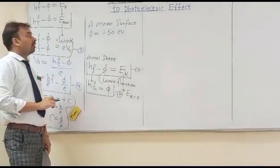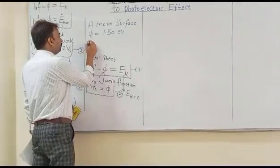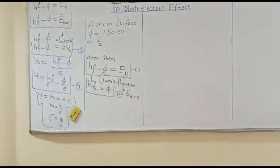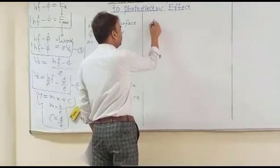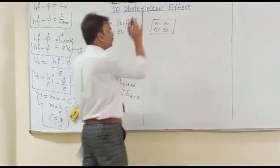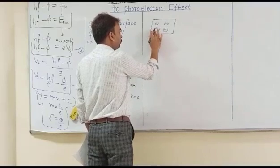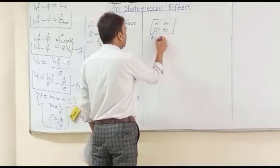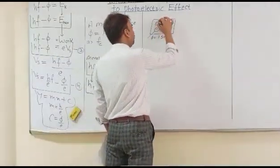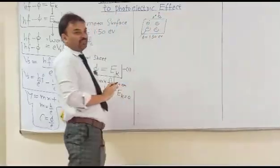In this question, we have a metal surface with a work function of 1.50 electron volts. Electron volt is the unit of energy. We have to find the critical frequency fc. If we make a diagram, we have a metal sheet with electrons inside it. Every electron needs a minimum of 1.50 electron volts of energy to get free from the electrostatic forces. Now we have to find out the critical frequency of the incident photons.